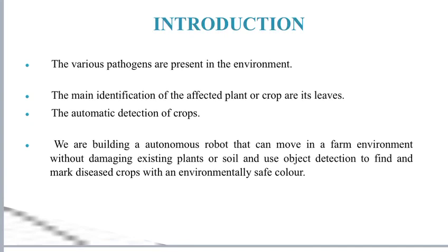Starting with the introduction: in India, farmers have great diversity of crops. Various pathogens are present in the environment which affect the crops and the soil in which plants are planted, thereby affecting the production of crops. Various diseases are observed on plants and crops. The main identification of the affected plant is its leaves. The various color spots and patterns on the leaf are very useful in detecting the disease. The past scenario for plant disease detection involved direct eye observation and remembering the particular set of diseases as per the climate. These methods were inaccurate and very time consuming.